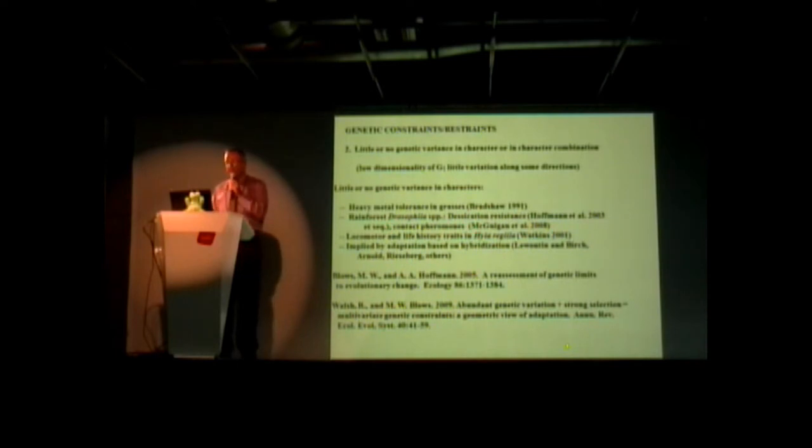So there are several lines of evidence that there may be genetic constraints on the direction and rate at which evolution can take place. There are a number of other examples that I can't go into, but I will just refer you to two very interesting papers.